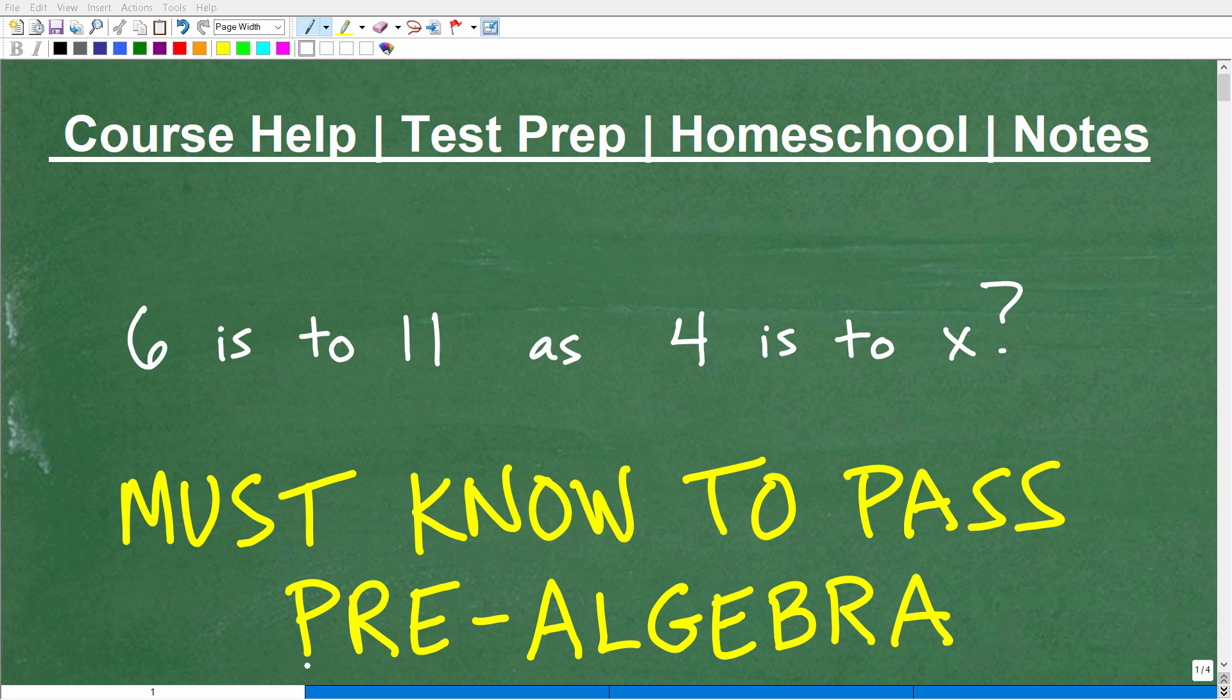Okay, let's do a pre-algebra level problem here. And of course, if you're taking any class beyond pre-algebra, like Algebra 1, Algebra 2, College Algebra, you absolutely need to know this, but this is the kind of stuff that you're learning at the pre-algebra level. So let's go ahead and review the problem and see if you can actually get the answer. And here it is. So it's 6 is to 11 as 4 is to x, as 4 is to what number?